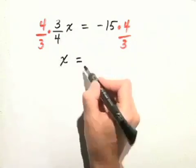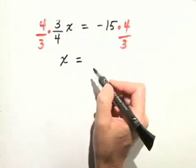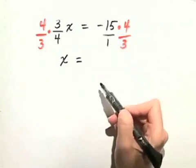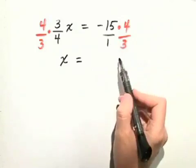That's the reason we multiplied by the reciprocal. This is equal to negative 15, and I'm going to write that as negative 15 over 1 times 4 thirds.